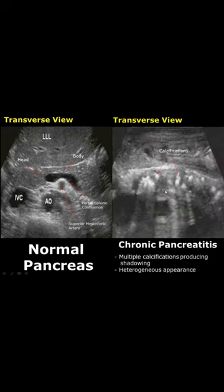In chronic pancreatitis, there is calcification of the pancreas, and it leads to hyperechoic calcifications which produce shadowing.